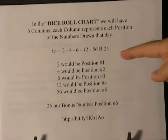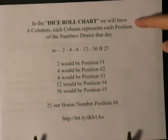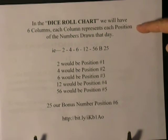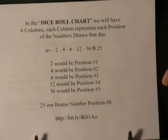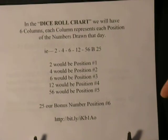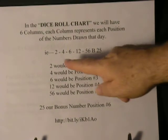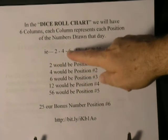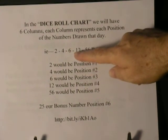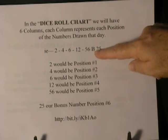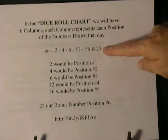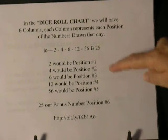In the dice roll chart, we will have six columns. Each column represents each position of the numbers drawn that day. For example: two, four, six, twelve, fifty-six, and the bonus ball would be twenty-five.